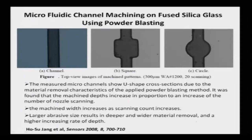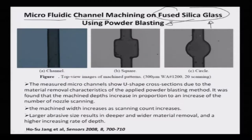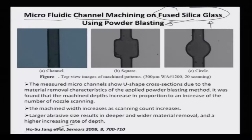Another very powerful powder blasting technique — essentially the same as abrasive jet machining in a different manner — is used for carving out microfluidic channels on fused silica glass. One observable thing is that most substrate materials being discussed are glass or similar, where brittle fracture and crack propagation are easier. As we learned from fundamental processes, since the principle mechanism is brittle fracture, materials amenable to brittle fracture are the more well-machined substrates. This example is reported from work by Jang et al published in Sensors in 2008, making different square, circle, and straight channel shapes on fused silica glass.